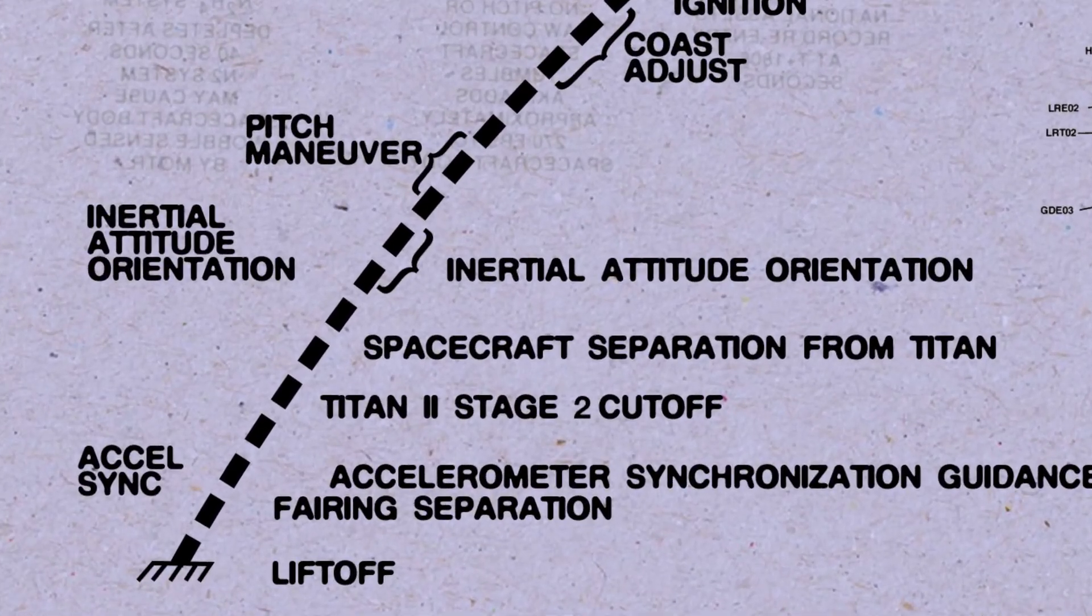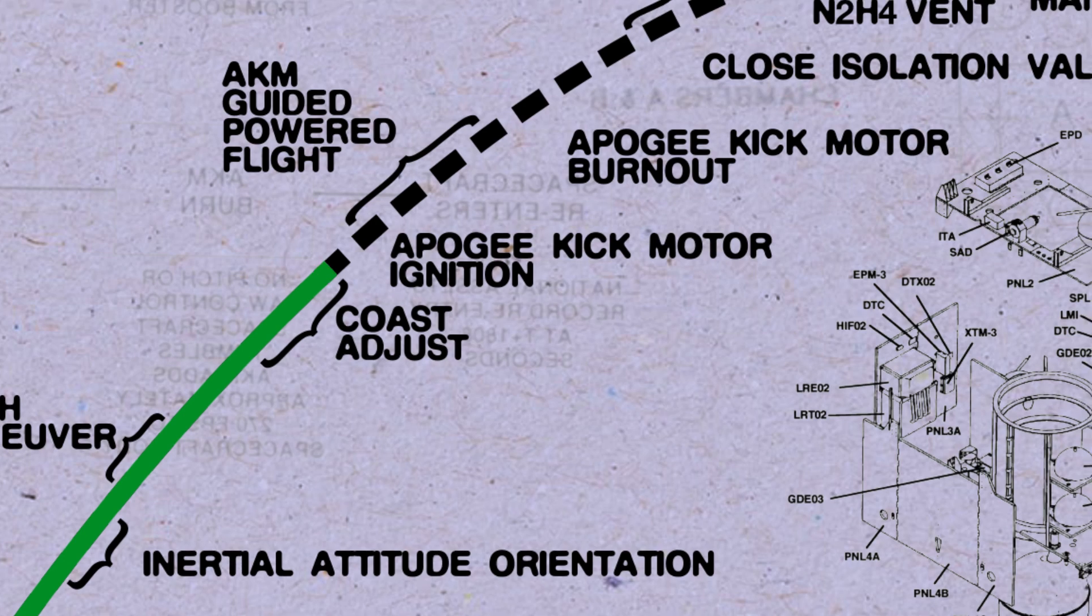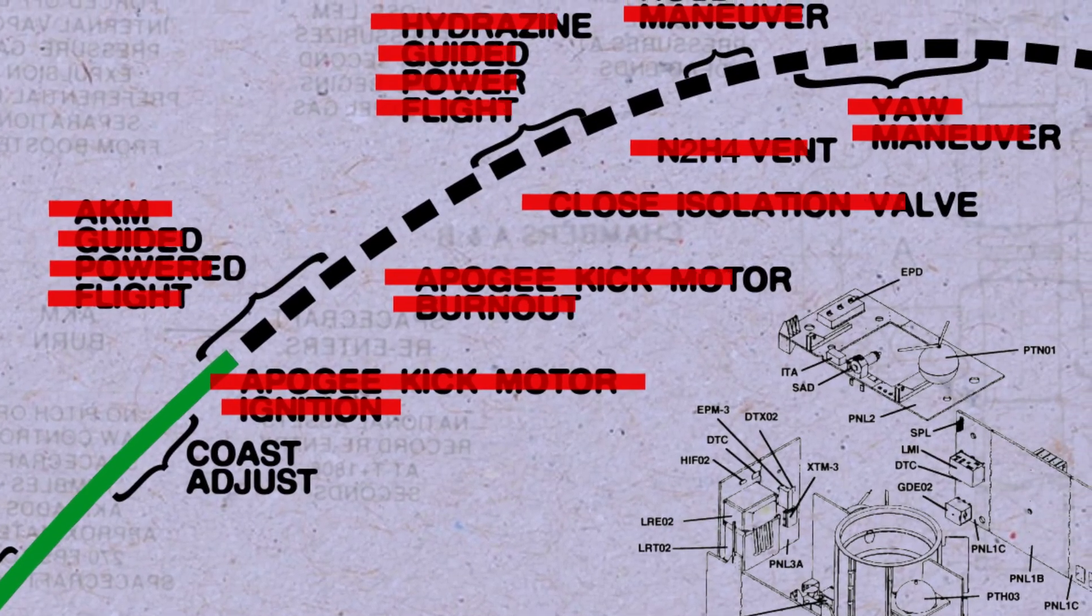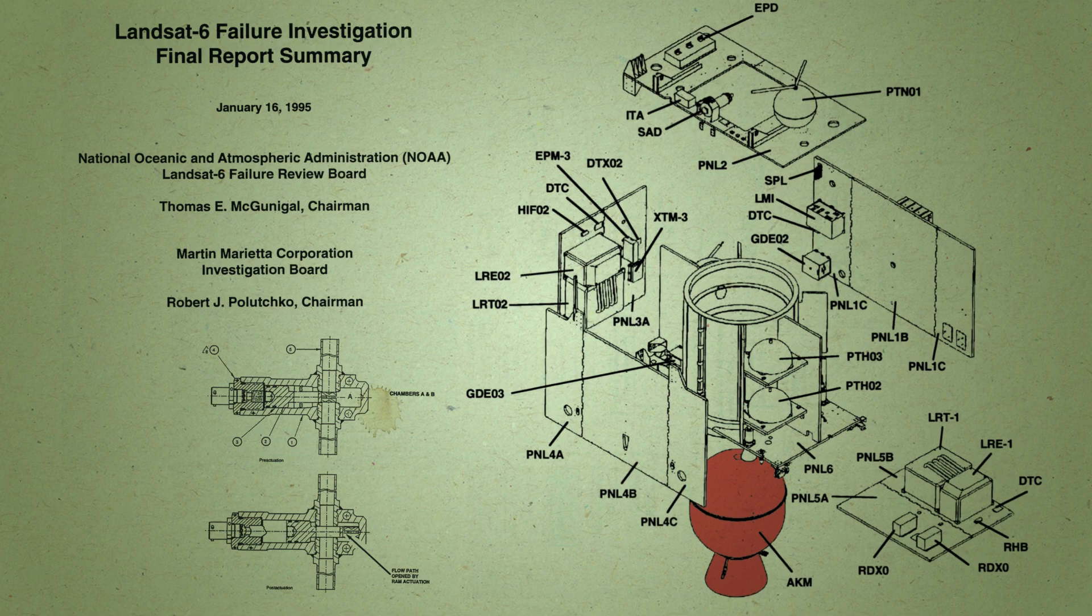NASA's team of scientists and engineers got to work immediately to figure out what went wrong. Turns out, it was a rupture in the rocket fuel chamber. They used failure as an opportunity to learn.